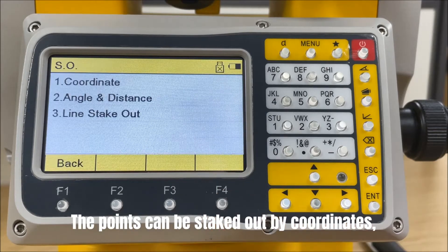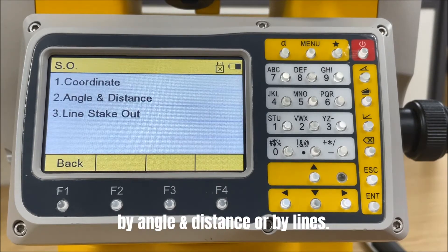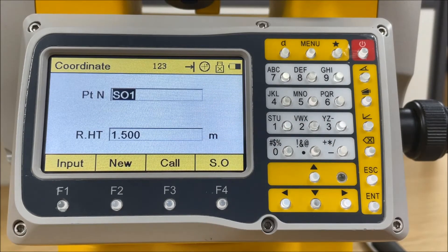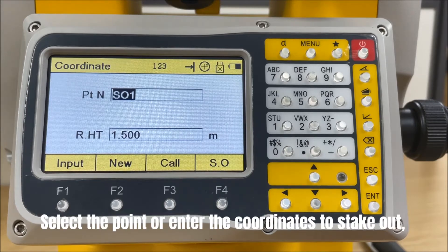The points can be staked out by coordinates, by angle and distance, or by lines. First of all, stake out points from coordinates. Select the point or enter the coordinates to stake out.